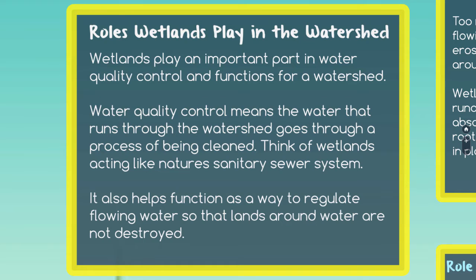When we talk about water quality control, we're talking about the water that travels through a watershed being cleaned. Wetlands do a very good job of cleaning that water. Think of wetlands kind of like nature's sanitary sewer systems. All that dirty water goes through underground pipes to a facility where it gets cleaned, so we can use it safely. Wetlands do the same thing — water travels through the watershed, hits a wetland, and the wetland cleans that water, which makes it safe for the animals and for us.